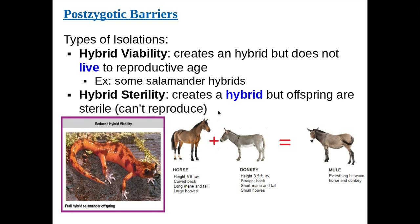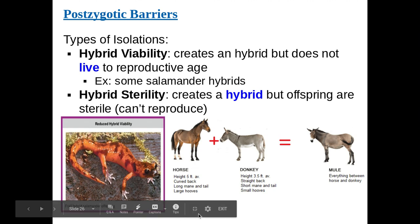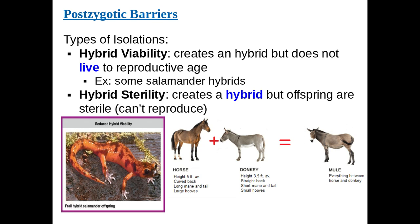Another postzygotic barrier is reduced hybrid fertility. You may be able to produce a hybrid, but that organism, once alive, cannot reproduce and continue as a new species. For example, hybrid sterility: when we mix a horse and a donkey together, we get a mule. But mules have an odd number of chromosomes because of the combination, so the chromosomes cannot properly separate during meiosis, and mules are not able to reproduce.